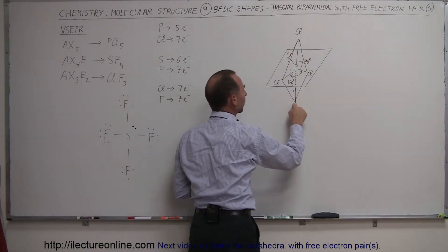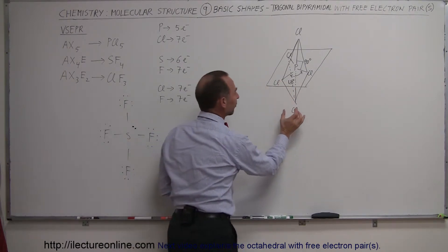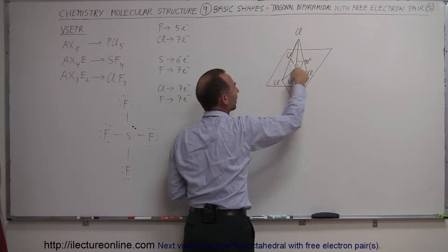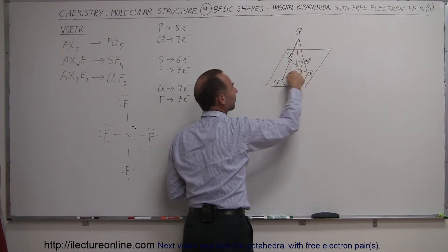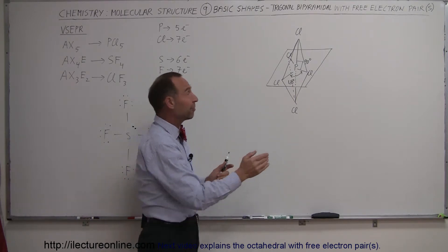Will it be up here, or down here, or will it be on one of the sides? Well it turns out, if we were to place the free electron pair up here, it would then have to compete repulsively against the three sets of electrons right here, which are only at 90 degree angles away from this one right here. So there would be a strong repulsive force, not a likely scenario.